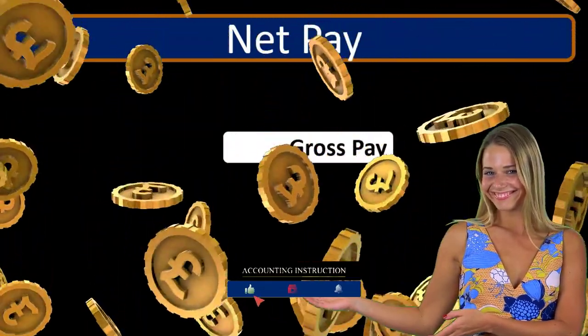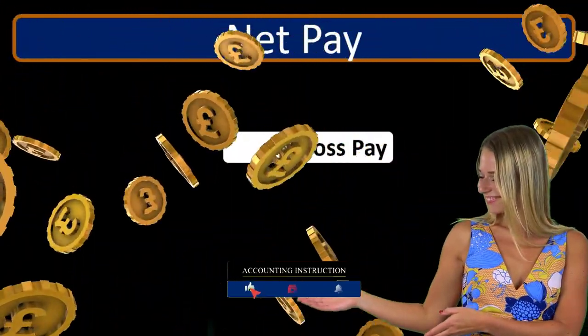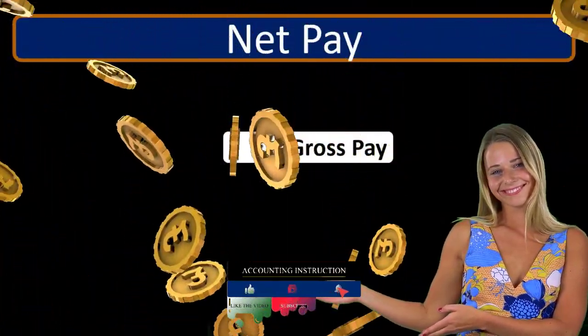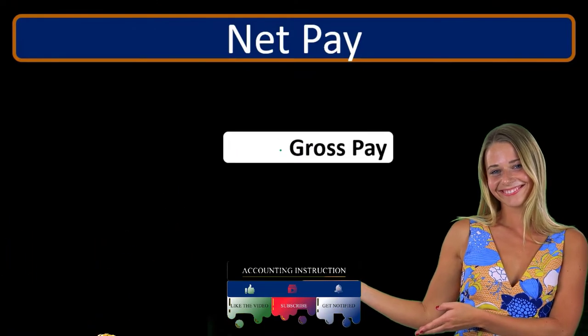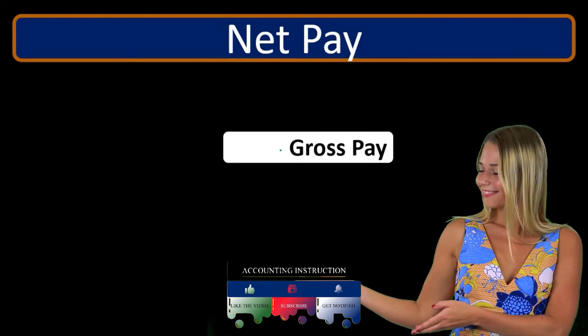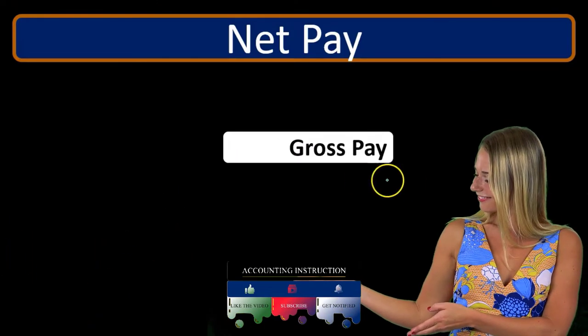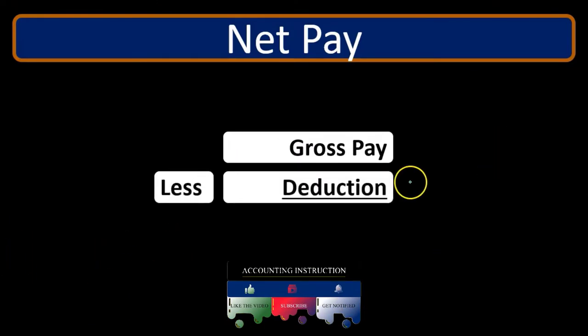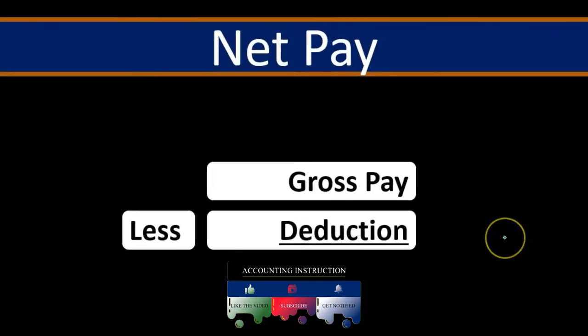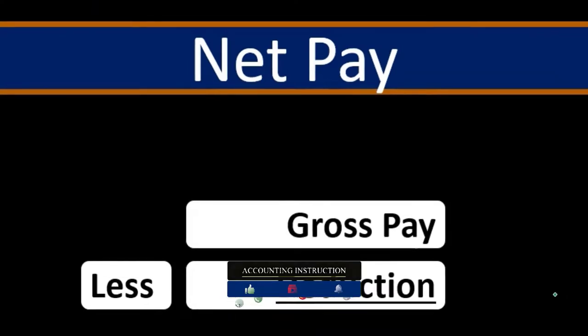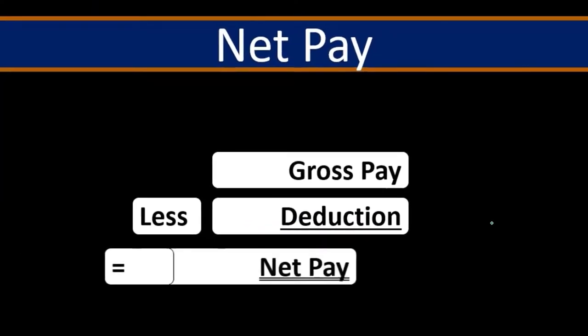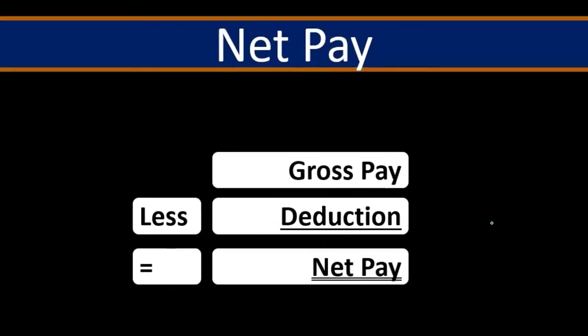So when we say how much money someone earns on a yearly basis — for example, someone earns a hundred thousand dollars — that's typically their gross pay. From a simplified standpoint, we just subtract out the deductions, and that gets us to the net pay.